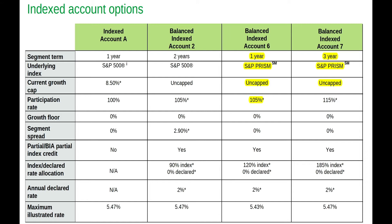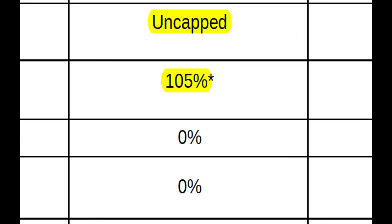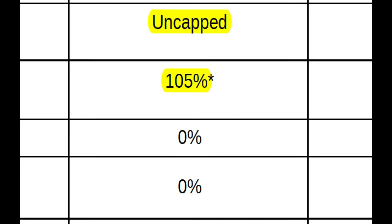As an example, with the one-year point-to-point uncapped PRISM index with a 105% participation rate, if the market rose 10%, you would get 105% of that gain — so 10.5%. If you've not watched my video on life insurance loans or interest crediting, you need to watch it so you can understand the difference between the different kinds of loans and how crediting works, and I'll put a link to that below.